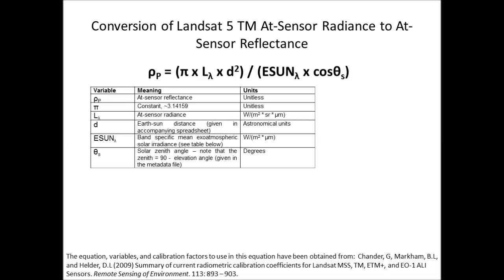I'll bring in some extra information to start with. First, we have a table that lists the variables in that equation, the meaning of those variables, and the units. Also, I have additional information based on the ESUN lambda value given in the first table. These are the band-specific values for the exoatmospheric solar irradiance in those particular wavelengths.